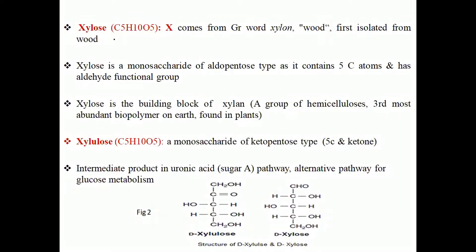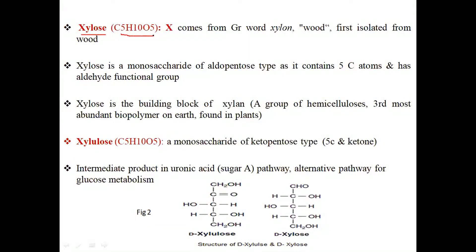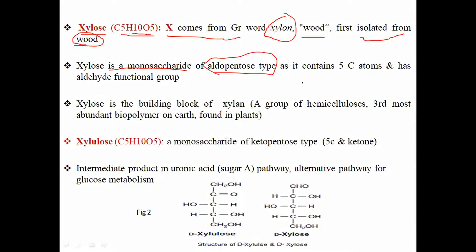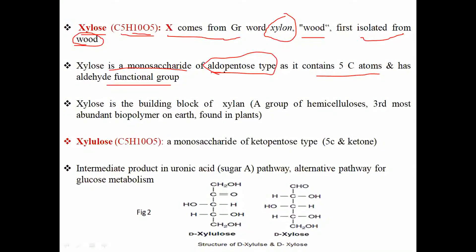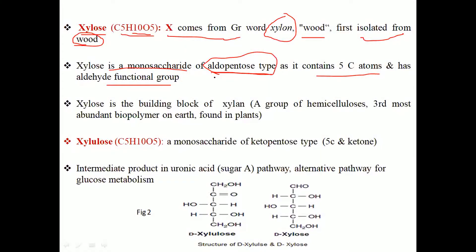Next is xylose. The molecular formula of xylose is C5H10O5. Xylose comes from the Greek word 'xylon,' meaning wood, because xylose was first isolated from wood — so it is also known as wood sugar. Xylose is a monosaccharide of the aldopentose type: it contains five carbons and has an aldehyde functional group. Aldopentose means it contains an aldehyde functional group and five carbon atoms.